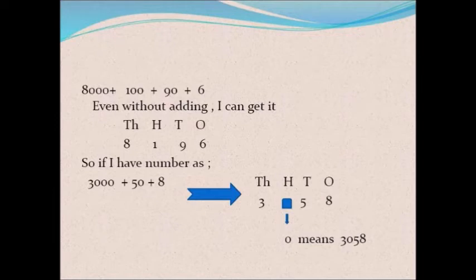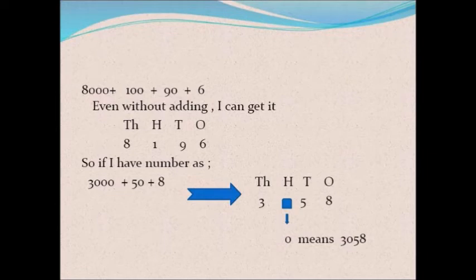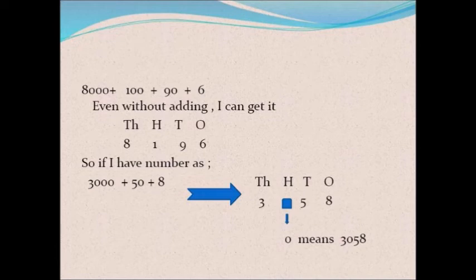If the number is 3000 + 50 + 8, first write the place positions: ones, tens, hundreds, thousands. Place 3 below thousands, 50 means 5 in the tens position, and 8 in the ones position. There is no hundreds value, so I place zero in the hundreds position. The number is 3058 — not 358, which would be wrong. You must write 3058.